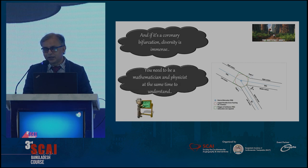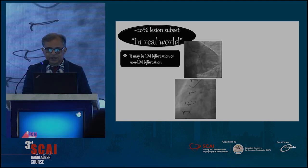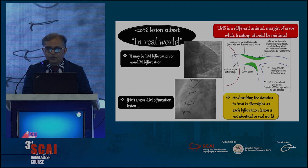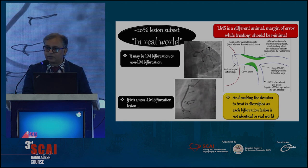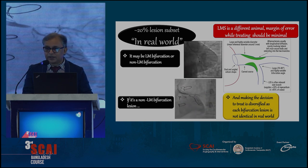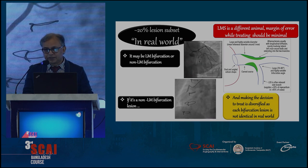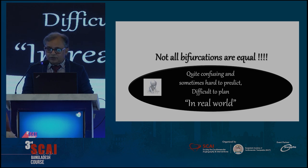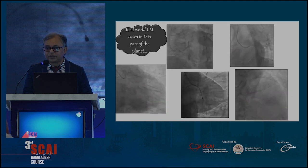If a coronary bifurcation lesion is present, the diversity is immense. You need to be a mathematician, physician, and physicist to understand and treat it. About 20% of lesions we face in the real world involve bifurcations, and four to ten percent should be left main bifurcation. It is very much alive with huge diversity for each and every bifurcation lesion — that is why not all bifurcation lesions are equal.